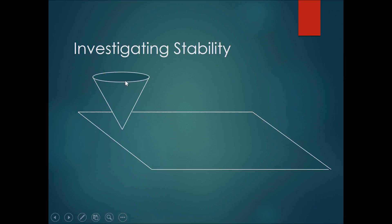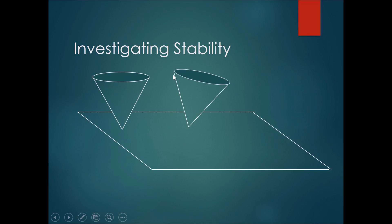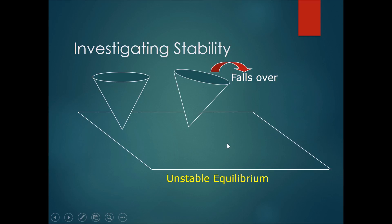Think of a cone, like an ice cream cone. Let's say you put it on a flat plane and you attempt to balance it straight on its point. Then let's say you manage to get it balanced on its point by hook or by crook. You use your finger to just push it a little bit. Clearly, this cone would then fall over and land on the side.